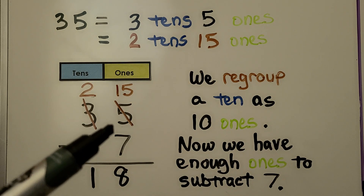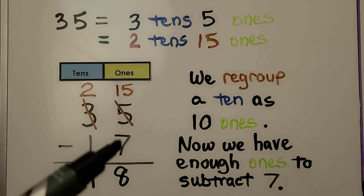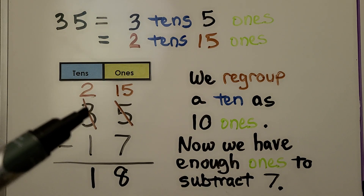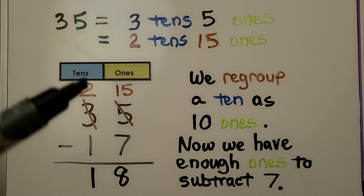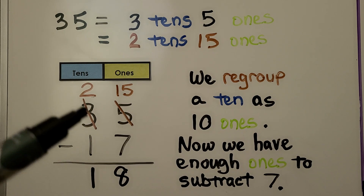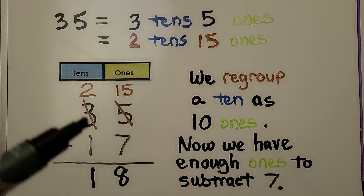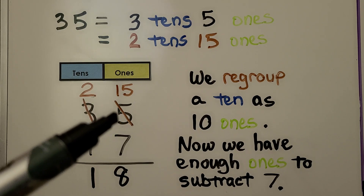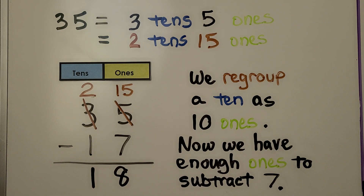We had five ones in the minuend. We were trying to take seven ones away and there weren't enough ones here. So we took a ten from the tens — now instead of three tens we have two tens — and we gave it to the ones as ten ones. Now instead of five ones we have fifteen ones. We regroup a ten as ten ones. Now we have enough ones to subtract seven.